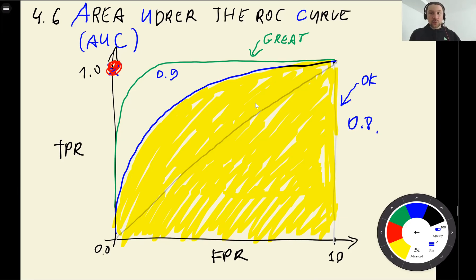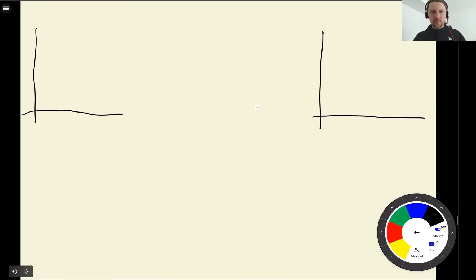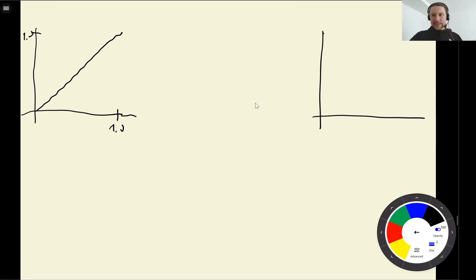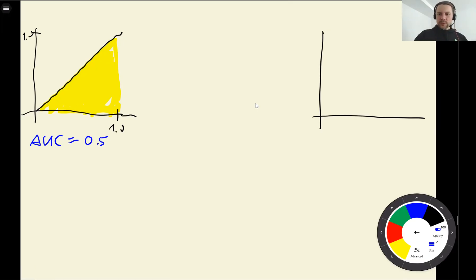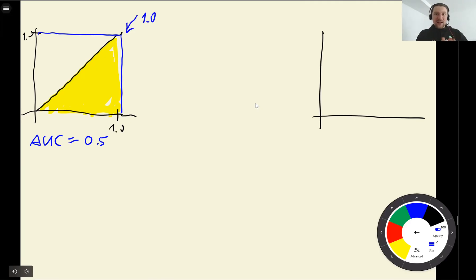This gives us a good way of evaluating the quality of our models. A random model is just a straight line, and the area under the ROC curve for it will be 0.5. The area under the ROC curve is often abbreviated as AUC, so AUC here is 0.5 — it's completely random. It's 0.5 because the total square is 1 and this is half of that.